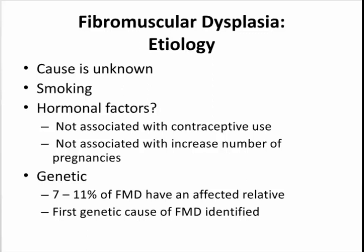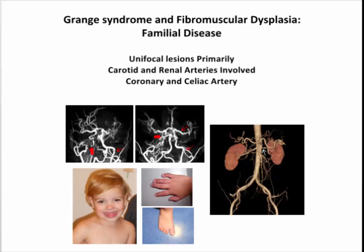There are genetic factors that predispose to this disease — about 10% of patients will have another affected family member. This week, we are publishing the first gene for fibromuscular dysplasia. We used a family with a syndrome called Grange Syndrome, which had autosomal recessive inheritance with very severe and early-onset fibromuscular dysplasia — hypertension starting in childhood due to renal involvement, and then strokes and TIAs by the time they were teenagers. Some affected family members went on to have carotid and celiac artery involvement.